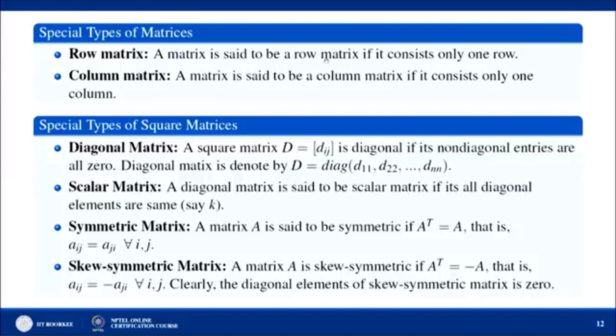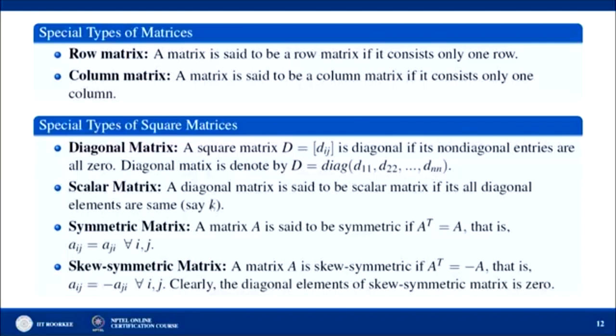Special types of matrices: a row matrix has only one row; a column matrix has only one column; a diagonal matrix is a square matrix where all non-diagonal entries are 0; a scalar matrix is a diagonal matrix where all diagonal elements are the same value k; a symmetric matrix satisfies Aᵀ = A, i.e., A_{ij} = A_{ji} for all i, j; and a skew-symmetric matrix satisfies Aᵀ = -A, i.e., A_{ij} = -A_{ji} for all i, j, with diagonal elements equal to 0.